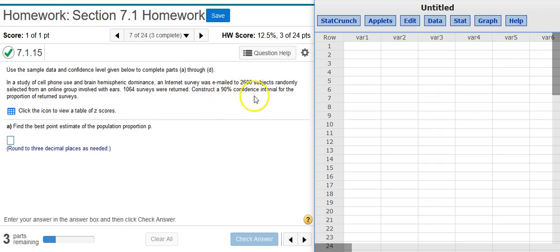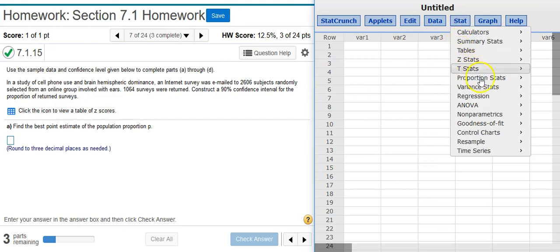I want a 90% confidence interval for the proportion of returned surveys. So to get my confidence interval, I'm going to go to Stat, Proportion stats, because we're dealing with proportions. One sample, because I've got just the one sample. With summary, because I don't have any actual data, just summary stats.